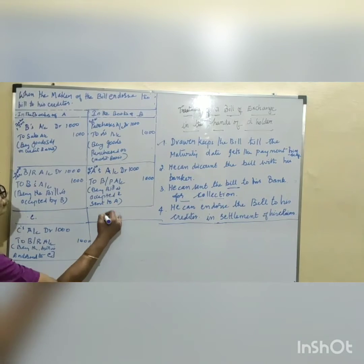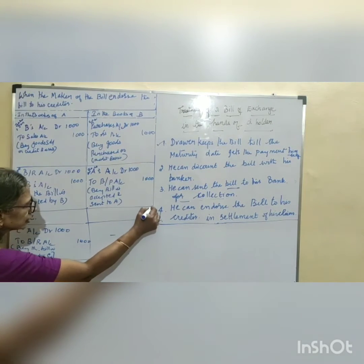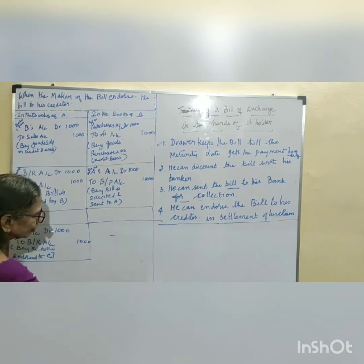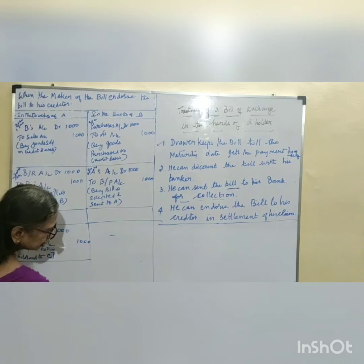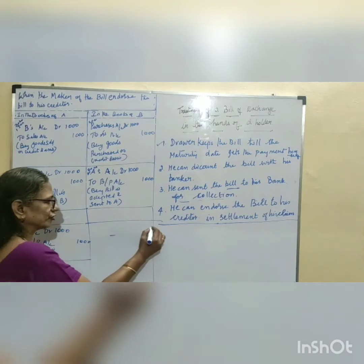But in the books of B, no entries will be there because he doesn't know whether it is endorsed, discounted, or sent for collection. And on the day of maturity, let us see in the books of C.